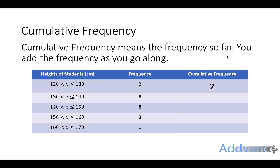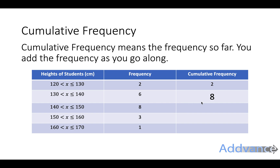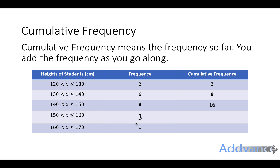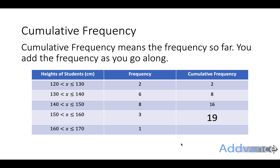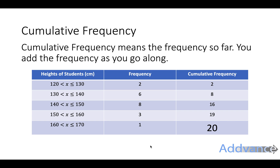In the next box, we're going to put the frequency up to 140, and to find that we just add the next lot of frequency — we get 8. Then we add the next frequency and get 16. Then 16 plus 3 is 19. And then we add the final frequency to get the final box. So you're just adding the frequency as you go along.